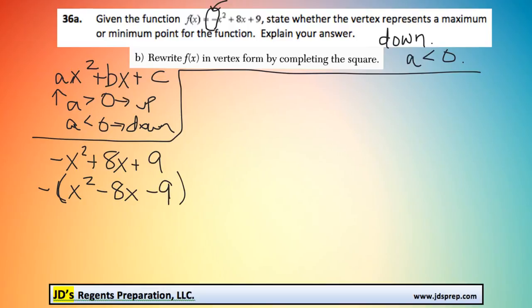At this point, to complete the square, we need to take half of our b value and square it. Half of -8 is -4. Negative 4 squared is positive 16. So what we're going to do is add 16 and subtract 16.